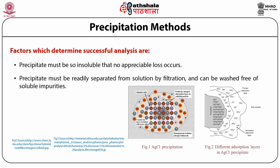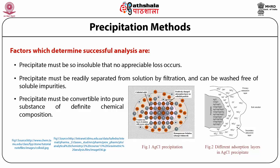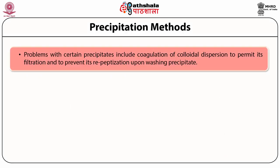The physical nature of the precipitate must be such that it can be readily separated from the solution by filtration and washed free of soluble impurities. The particles must not pass through the filtering medium and the particle size must be unaffected by the washing process. The precipitate must also be convertible into a pure substance of definite chemical composition, either by ignition or by a simple chemical operation such as evaporation.